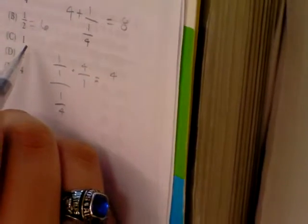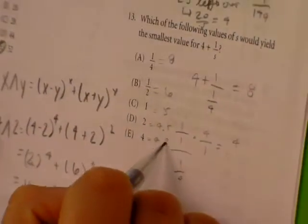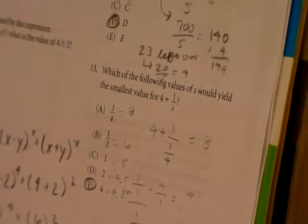4 plus 1 over 1, 4 plus 1 is 5. 4 plus 1 over 2, 4 plus 0.5 is 4.5. 4 plus 1 over 4 is 4.25. So this is the answer. Which one gives the least? Very good.